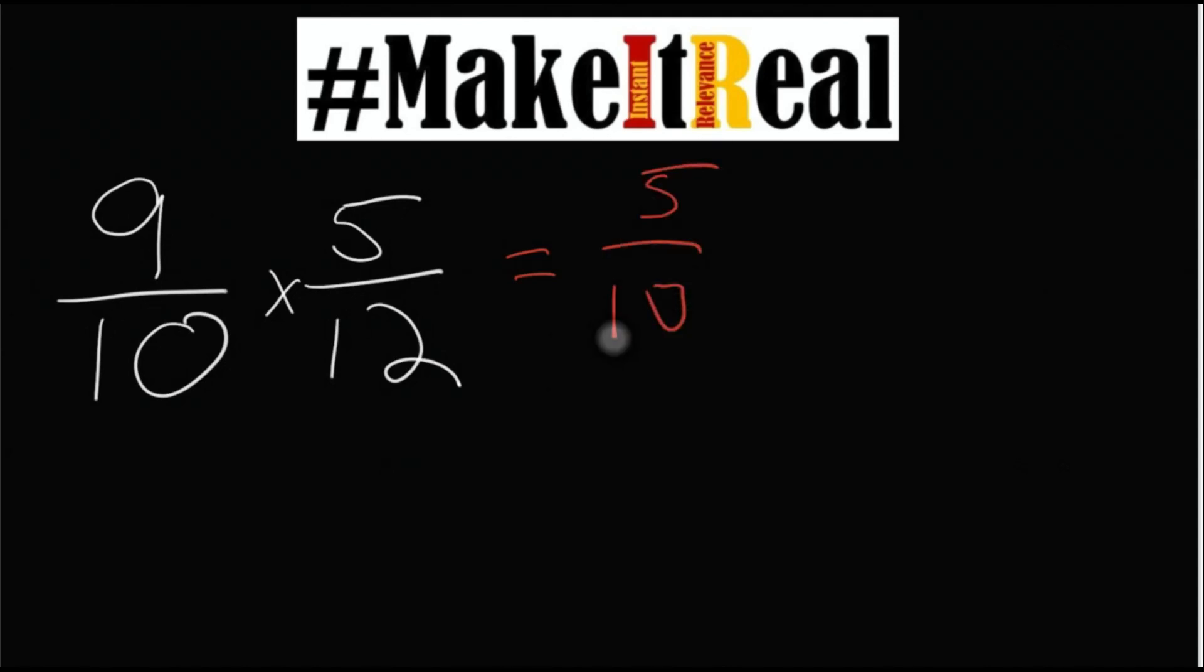5 tenths times 9 twelfths. In that case they're able to jump to this process and still visually understand that what they've done is create a commutative property of multiplication that has allowed these fractions to be rewritten. They can simplify that to 1 half times 3 fourths like in the last problem and get the 3 eighths the same way.